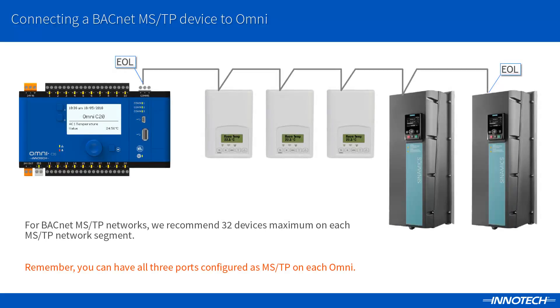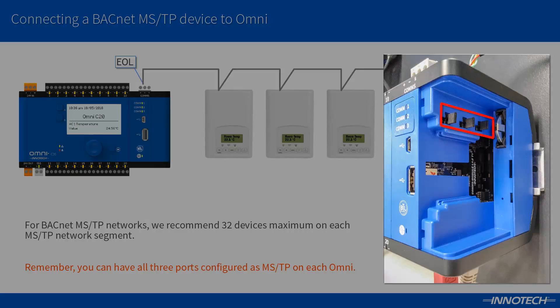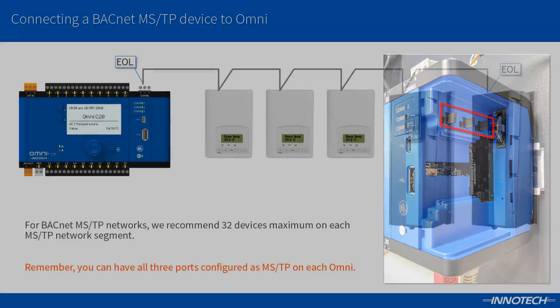The MSTP network needs to be correctly installed and terminated. This includes the end of line resistors and daisy chain topology with no more than 32 devices. This can depend on the manufacturer and could be less, so ensure that you check the documentation for more information on device capacities. Each Omni has end of line jumpers that can be set for the start of the MSTP network segment. By default these are set to off.